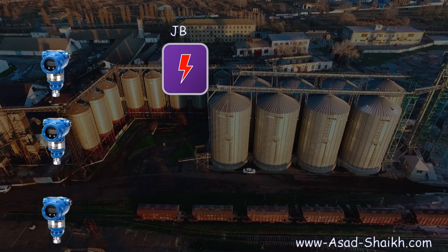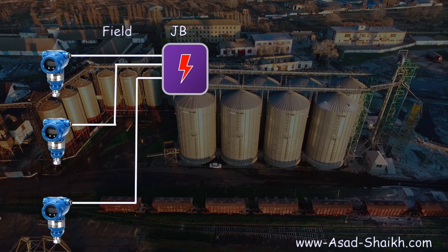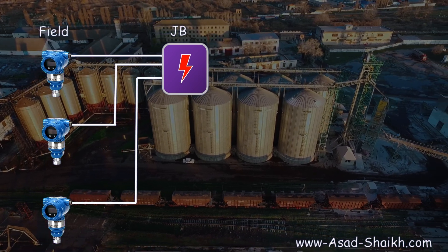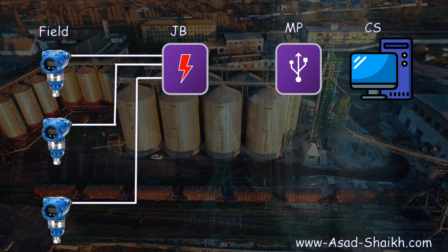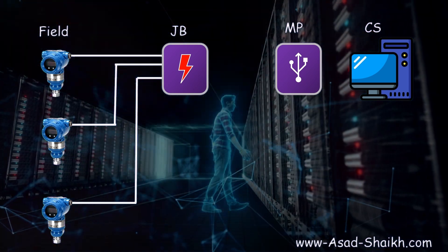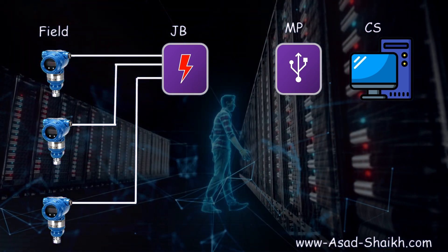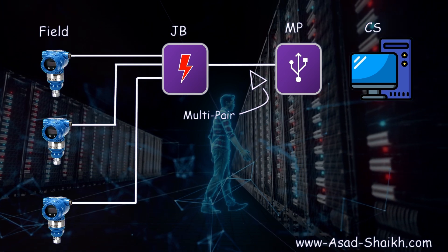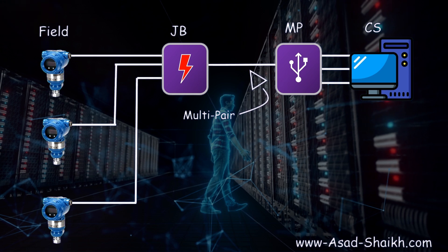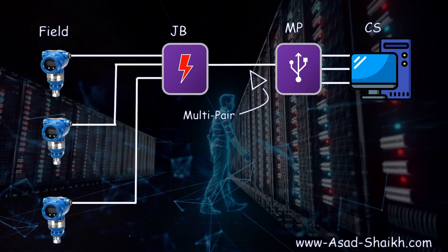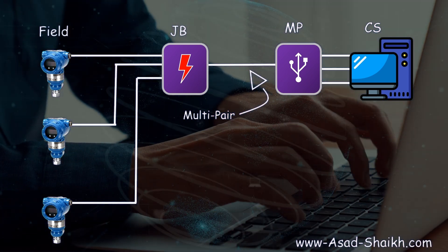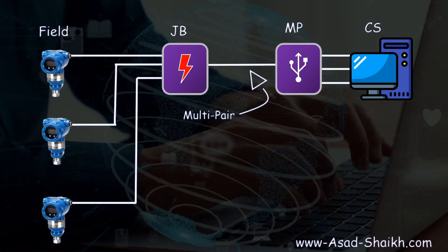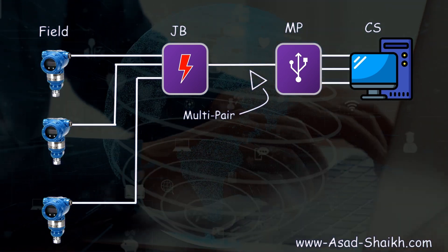To understand where the junction box fits in the overall big picture: various transmitters in the field are connected to your junction box. From the junction box in the field, you go to your marshalling panel, and from the marshalling panel to your control system. The cable from the junction box to the marshalling panel is generally a multi-pair or multi-core cable, and the control system will have AI, AO, DI, and DO cards. In this video we will focus on the JB part.